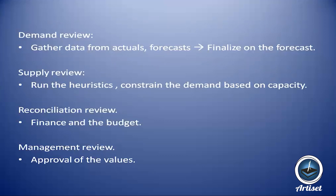For example, the sales team says 100, the demand planner says 150, and the marketing team says 200. They ultimately converge on a single agreed consensus value as the final demand. If demand and supply reviews are not integrated it becomes a big problem. This consensus demand value is then sent directly to supply — they are integrated.